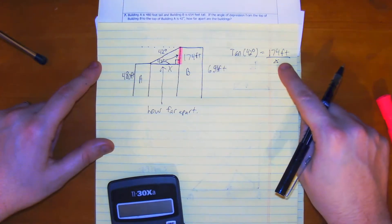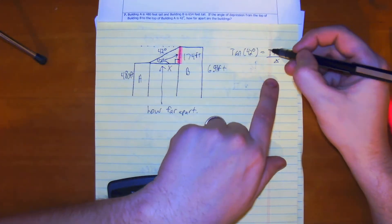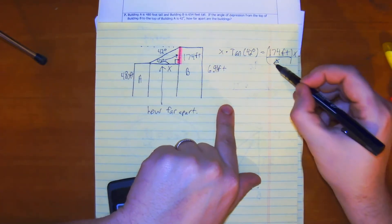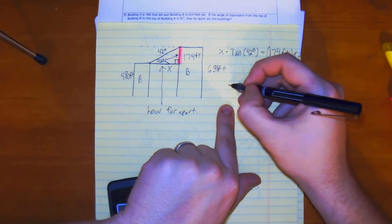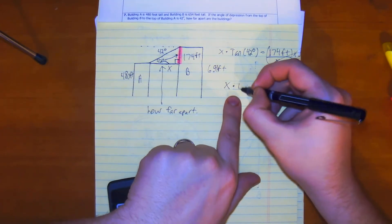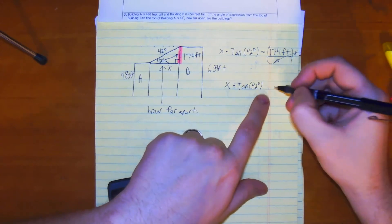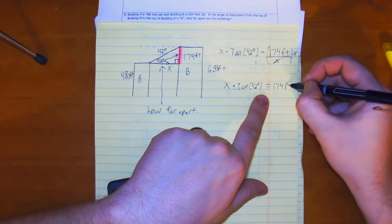The way we can solve this is we need to multiply both sides by x. These x's would cancel, so we get x times tan of 42 degrees equals 174 feet.